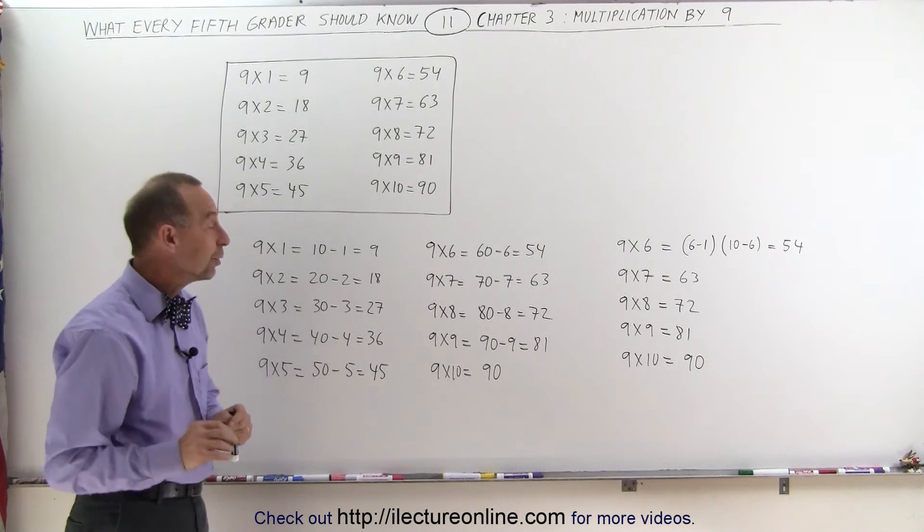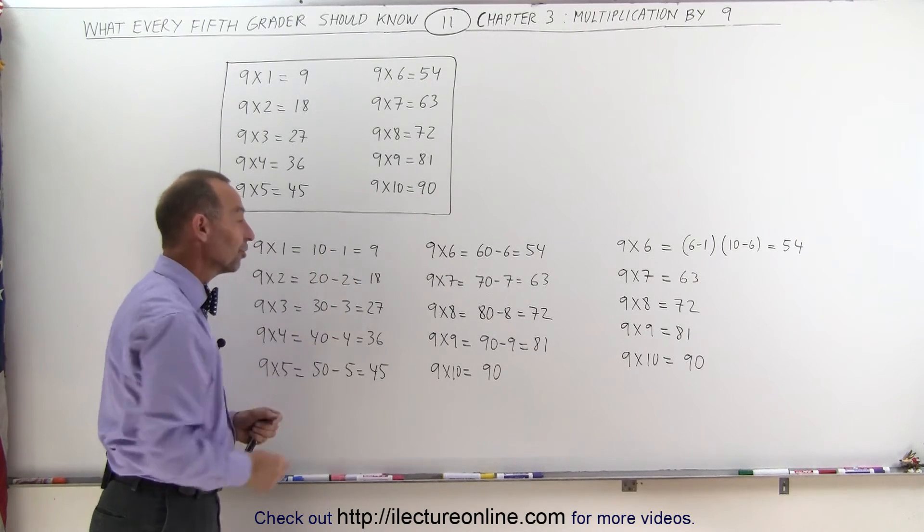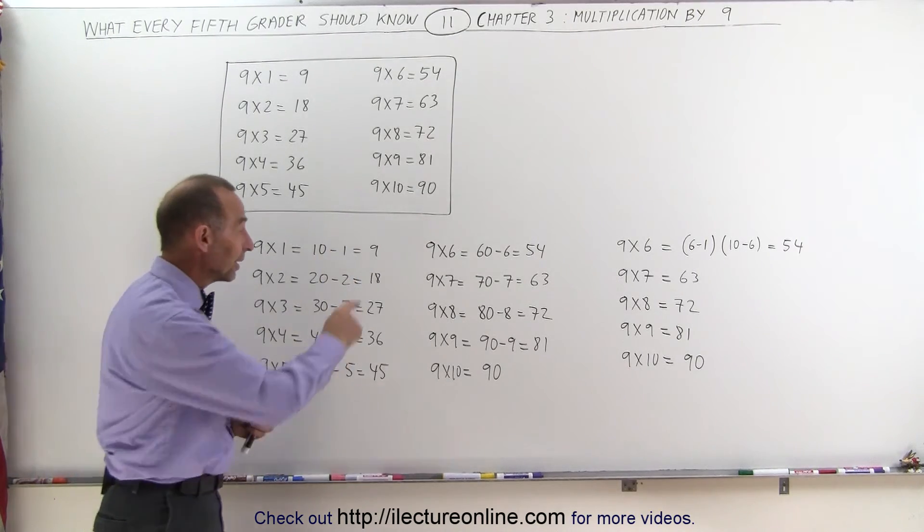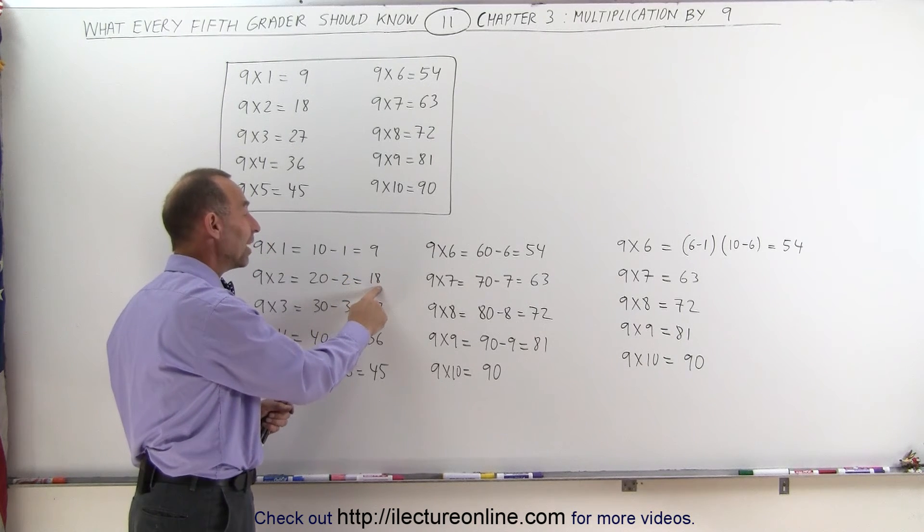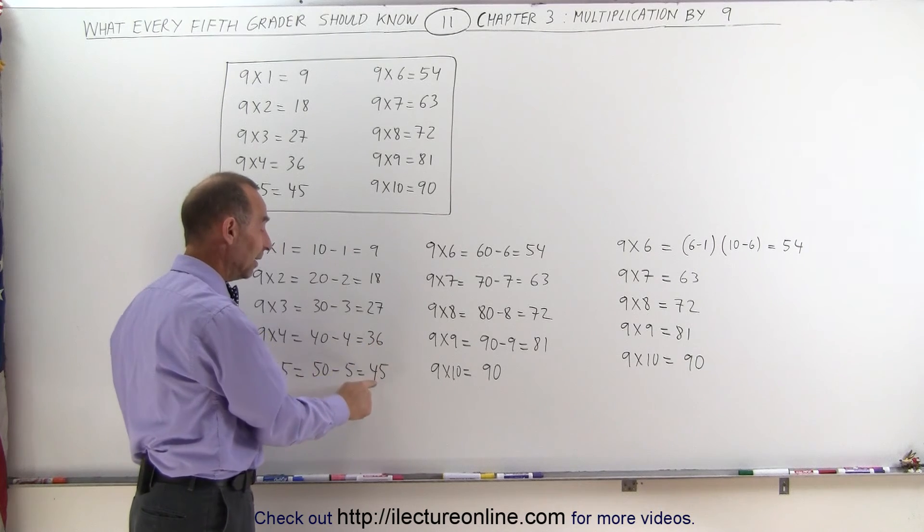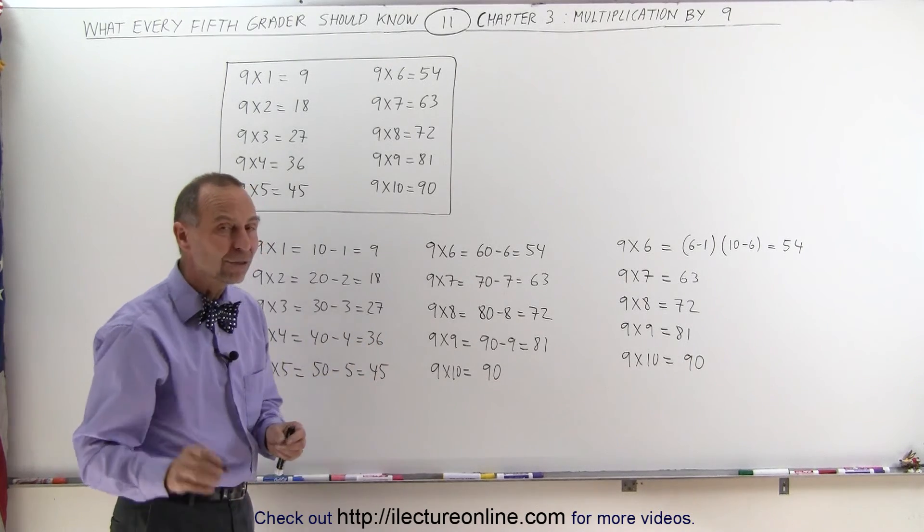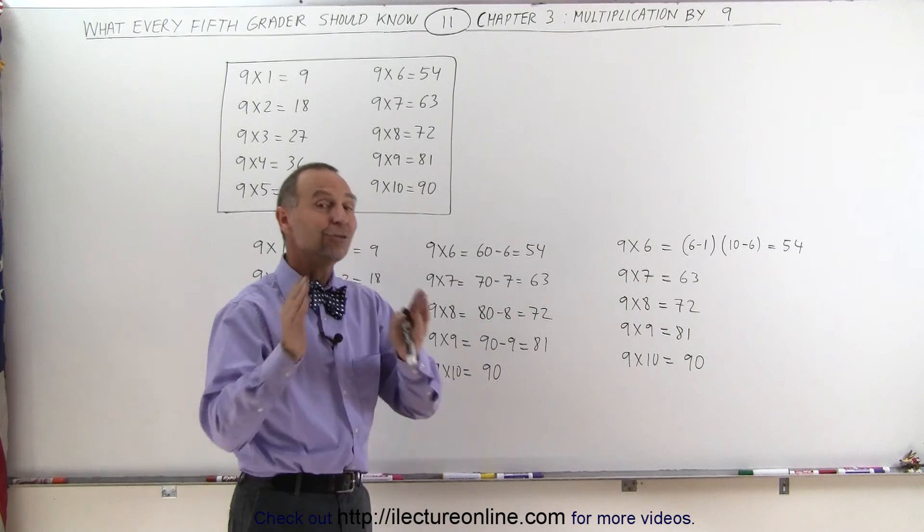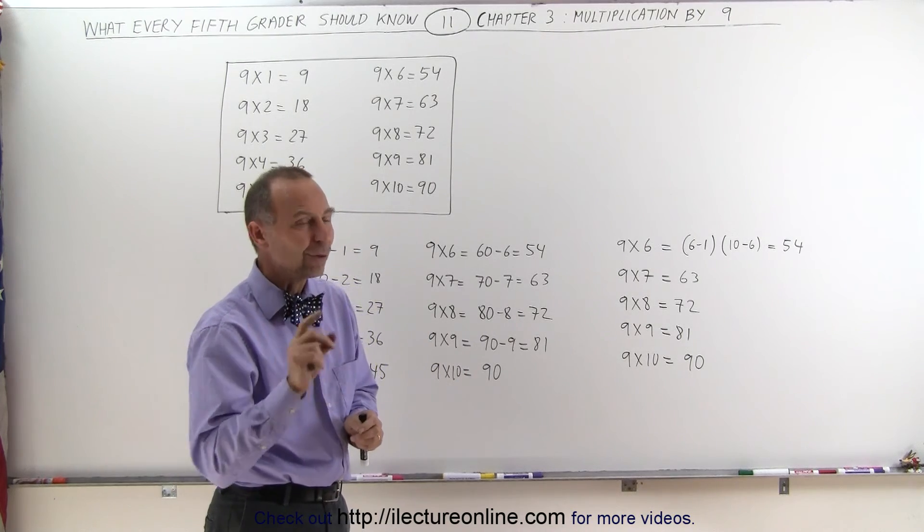And there's one other thing you can look at. Notice that all the answers, if you add the two digits together—well here you'll have one digit which is 9—but add 1 plus 8 you get 9, add 2 plus 7 you get 9, add 3 plus 6 you get 9, add 4 plus 5 you get 9, so always make sure that when we add the two numbers together they add up to 9 or the number is wrong.